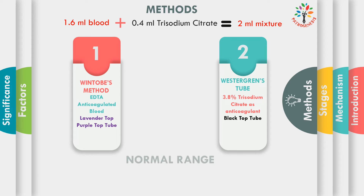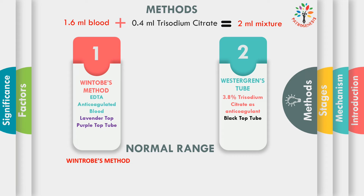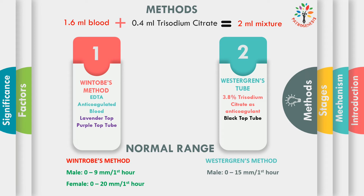Now I am going to talk about normal ranges. For Wintrobe method, the normal range for males is 0–9 mm per first hour and for females 0–20 mm per first hour. For Westergren method, the normal range for males is 0–15 mm per first hour and for females 0–20 mm per first hour. One important thing: you must write the unit as mm per first hour, not mm per hour. mm per first hour is the correct unit for ESR.